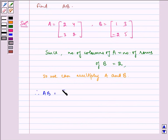Therefore, AB equals matrix 2, 4, 3, 2 multiplied by matrix 1, 3, minus 2, 5.